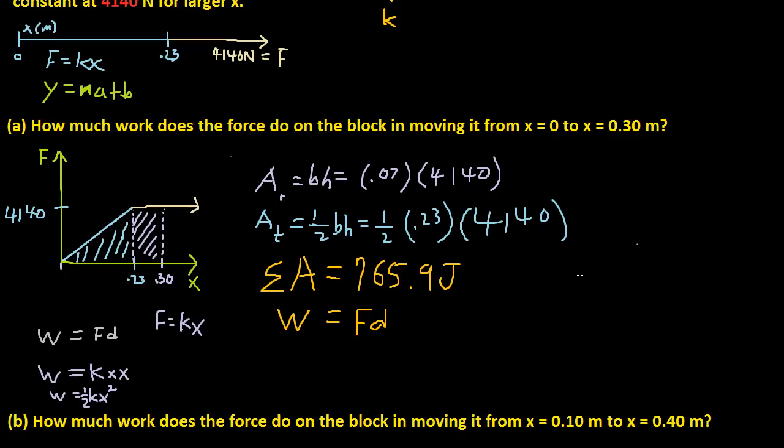Like work is equal to 1 half base, because a is work, so 1 half times base, which is the distance, times height, which is the force. So we just, the distance times force. And if we just rewrite that differently, it would just be 1 half force times distance.